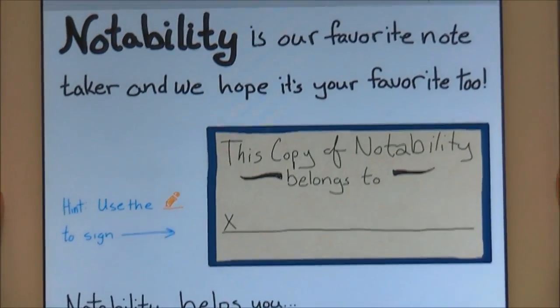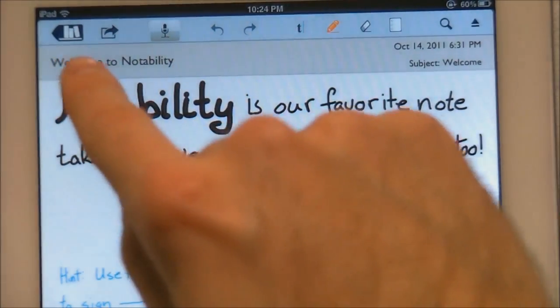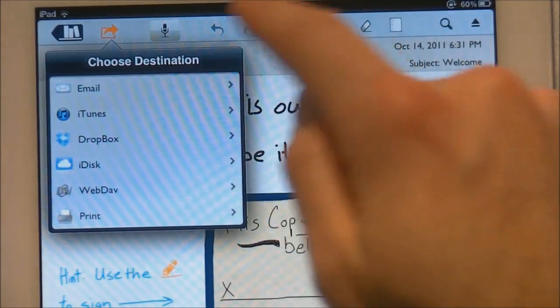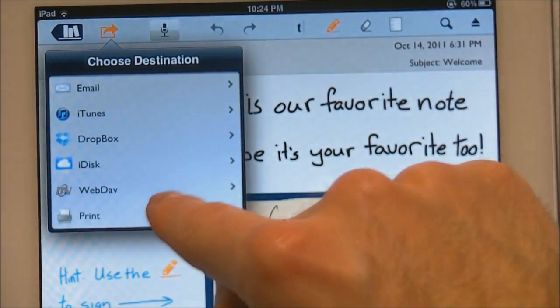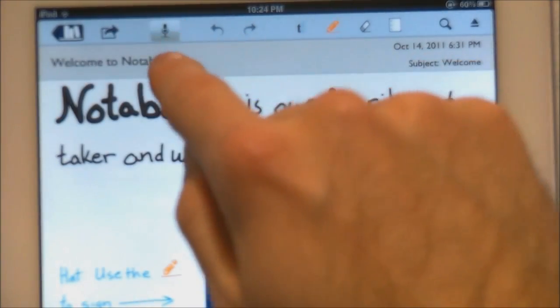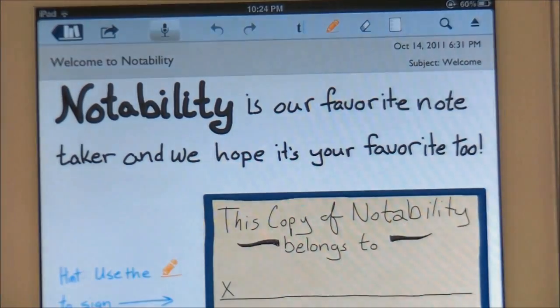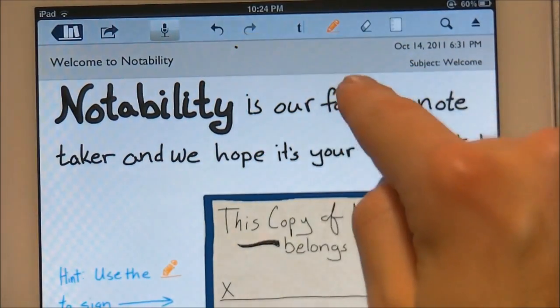So we're just going to go through a little bit right here. Right up here is your toolbar. You can go back to the library. You can choose your destination of emailing stuff, uploading it to Dropbox or iTunes or iDisc or anything like that. You can actually put your own personal recordings in inside of your notes, your undo and redo buttons.